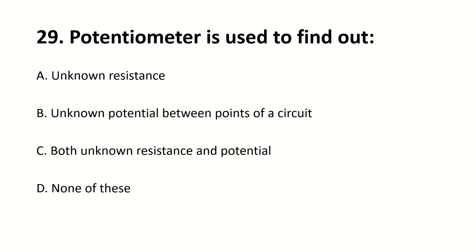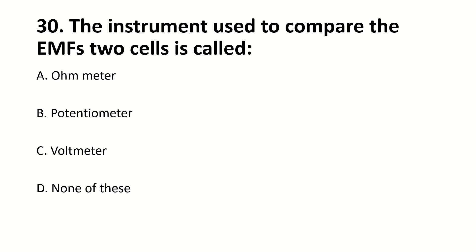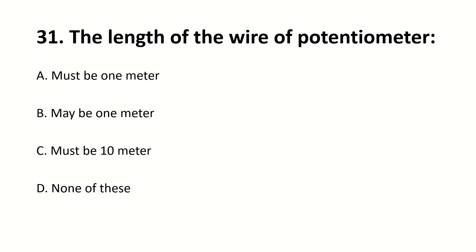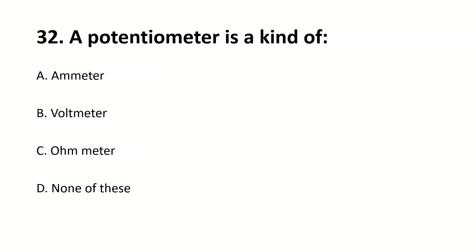A potentiometer is used to find out — blank. Right answer is C: both unknown resistance and potential. The instrument used to compare EMF — blank. Right answer is B: potentiometer. The length of the wire of a potentiometer is — blank. Right answer is B: may be 1 meter. Potentiometer is a kind of — blank. Right answer is B: voltmeter.